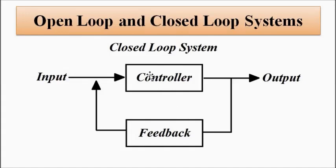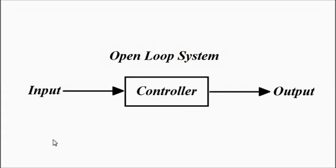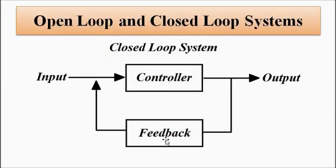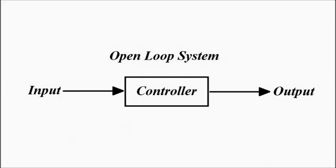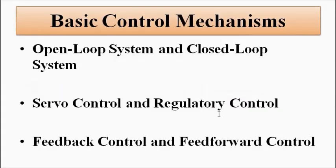Open loop systems are simple to design, less complicated, easy to install, and require less maintenance. Closed loop systems, because of the increased number of circuit elements involved with feedback, have a much larger number of circuit components, which increases cost, makes maintenance more difficult, and complicates installation. However, from the point of view of accuracy, closed loop systems are more accurate compared to open loop systems.